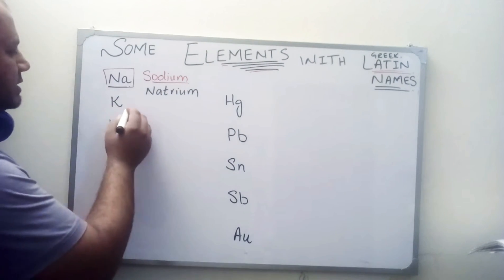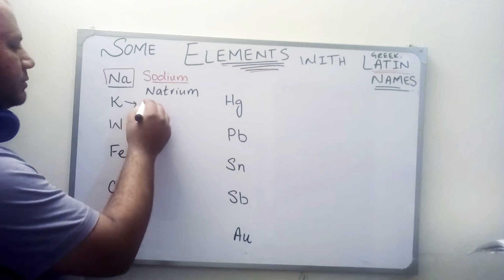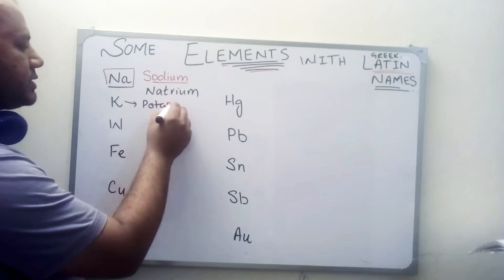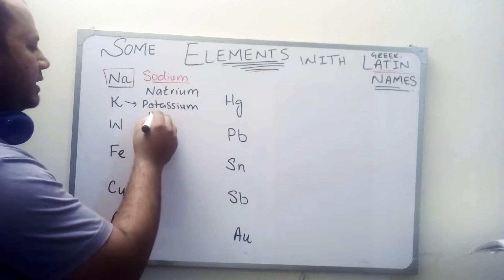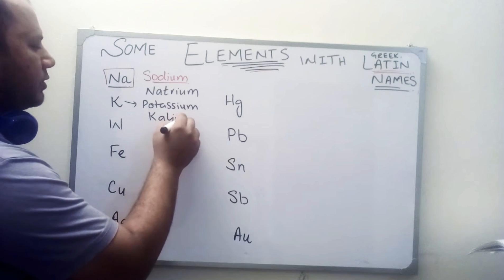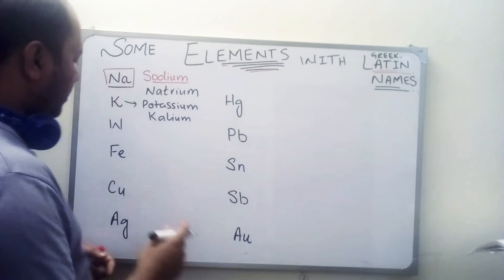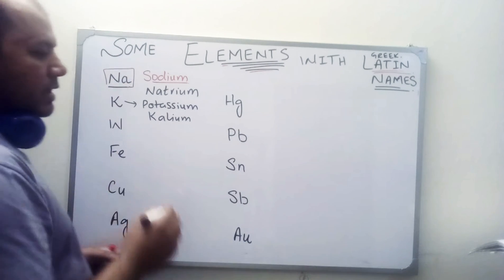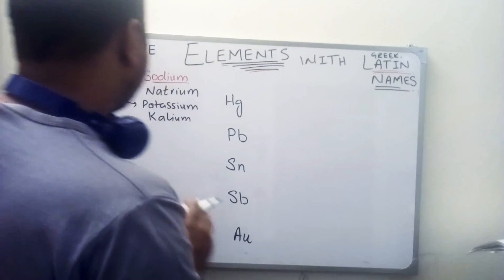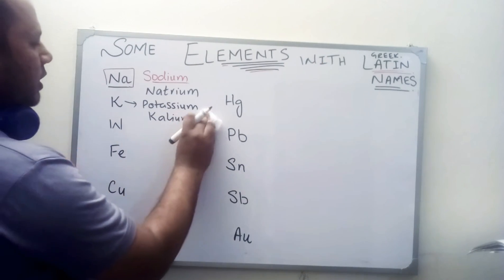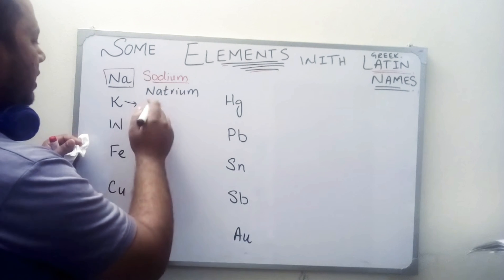This element is known as potassium normally, but its original scientific name was 'Kalium'. So the symbol K comes from Kalium.